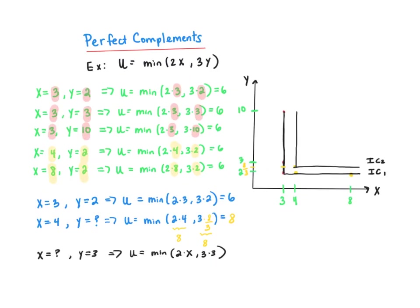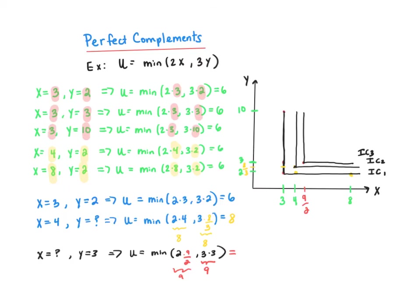Now consider what happens if y increases from 2 to 3. What must x be so that this person is made better off by this 1 unit increase in y? To answer that, see that 3 times 3 is 9. So then the question becomes: 2 times what will also equal 9? The answer is 9/2. 2 times 9/2 also equals 9. So the bundle that has 3 y's and 9/2 x will give the consumer 9 utils of happiness. That's this bundle right here, which is necessarily on an even higher indifference curve, since this bundle gives the consumer 9 utils. As you can see, for perfect complement goods, each indifference curve is an L-shape, and the further we move away from the origin in the northeast direction, the higher the level of utility.